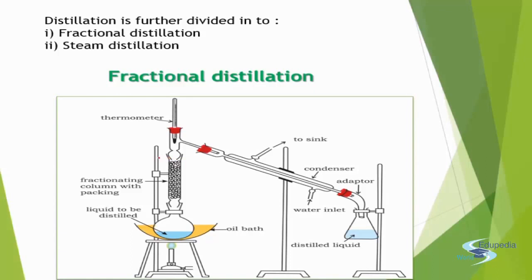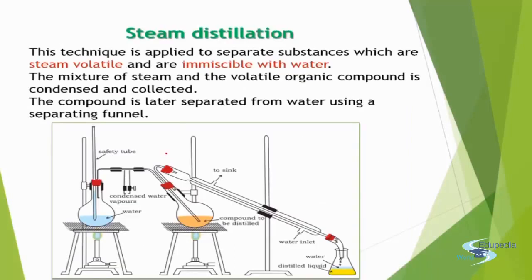In the fractionating column, you heat the liquid, it converts to vapors, the vapors rise up — the one with lower boiling point condenses, while the more volatile one rises higher and higher, and they keep condensing at different levels. Finally, the more volatile compounds are at the higher range of the fractionating column, and this way you can separate them when the boiling point difference is low.